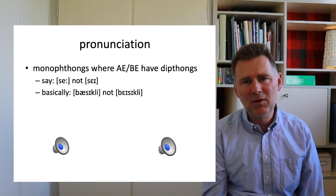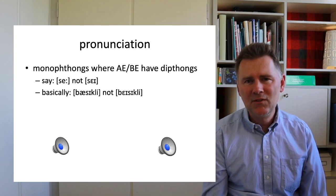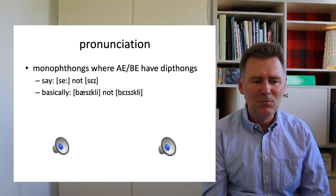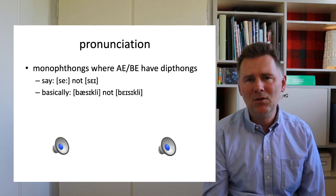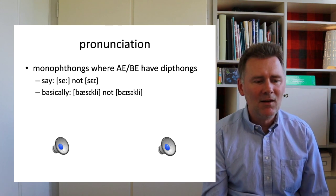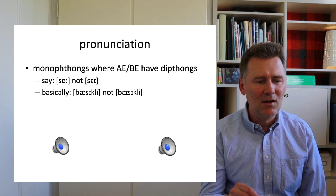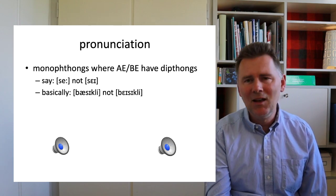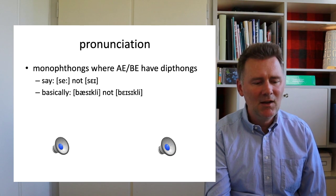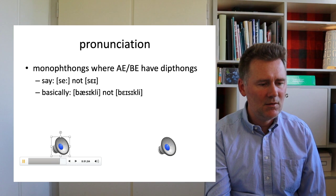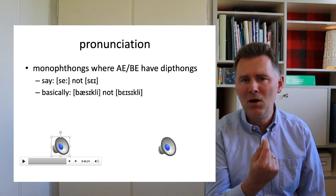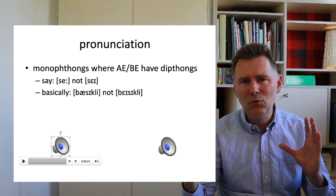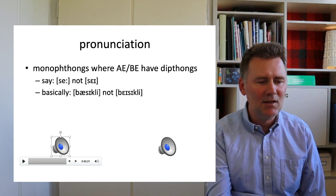Let's start with the differences with regard to pronunciation. One characteristic of the speaker is that he uses monophthongs in certain places where American English or British English would use diphthongs. Take for example the word 'say' — when I pronounce it, it comes out with a diphthong. What the speaker produces sounds more like 'say' rather than 'say' — so that's a monophthong, just one vowel instead of two vowels in a row. The same phenomenon can be seen in the word 'basically.'